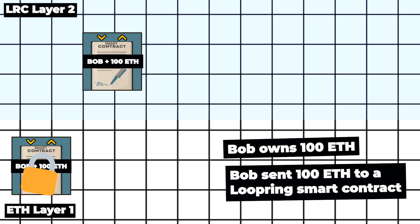So by sending your funds to a Loopring smart contract, you allow your transactions to be processed on layer 2, even though your funds remain on Ethereum layer 1.